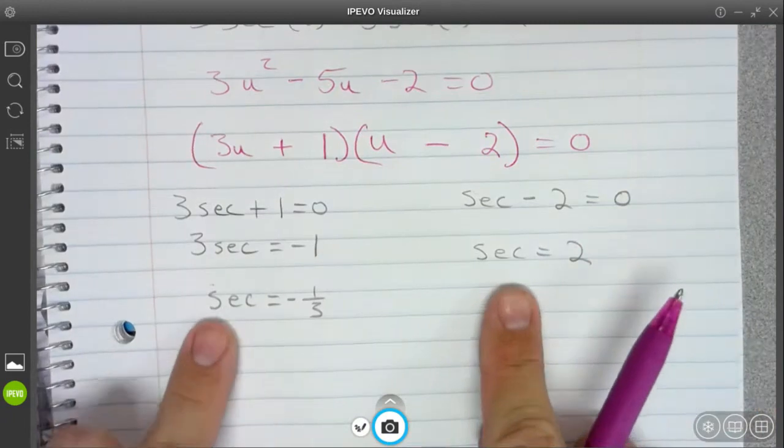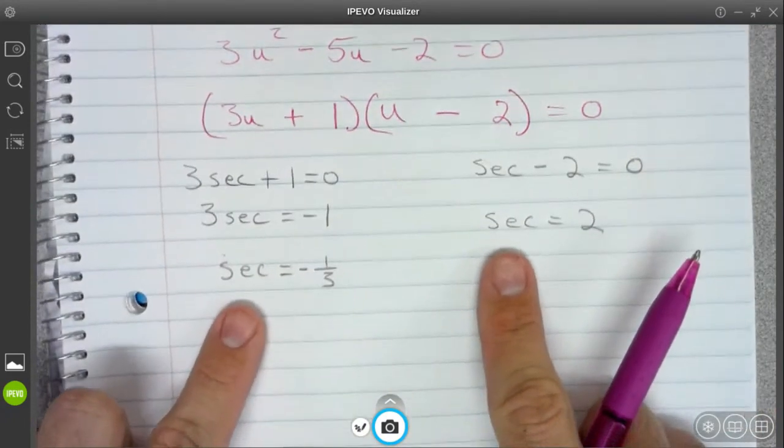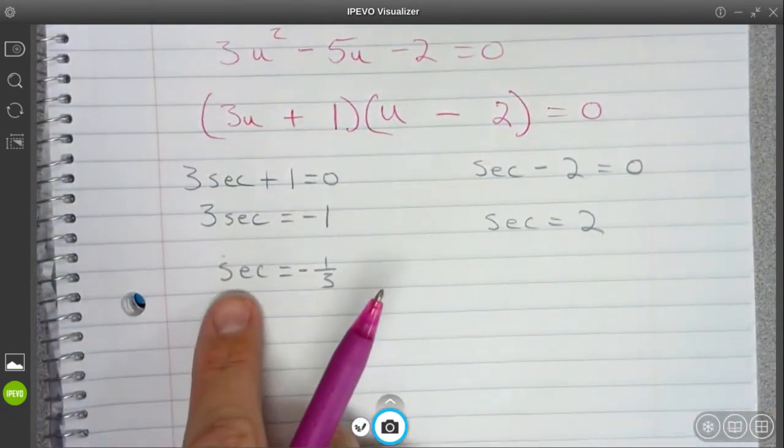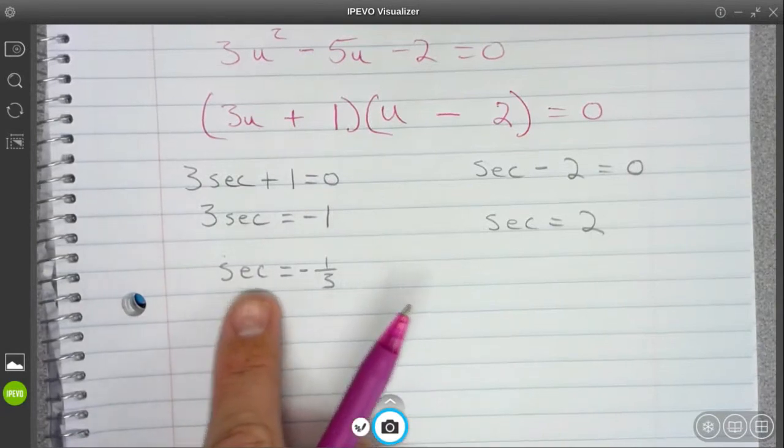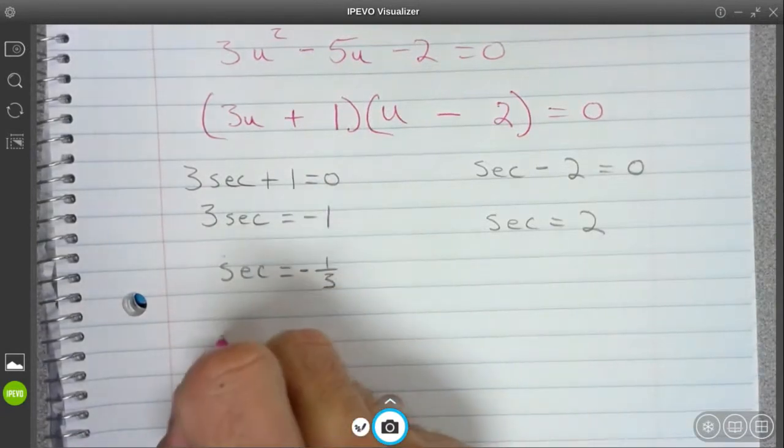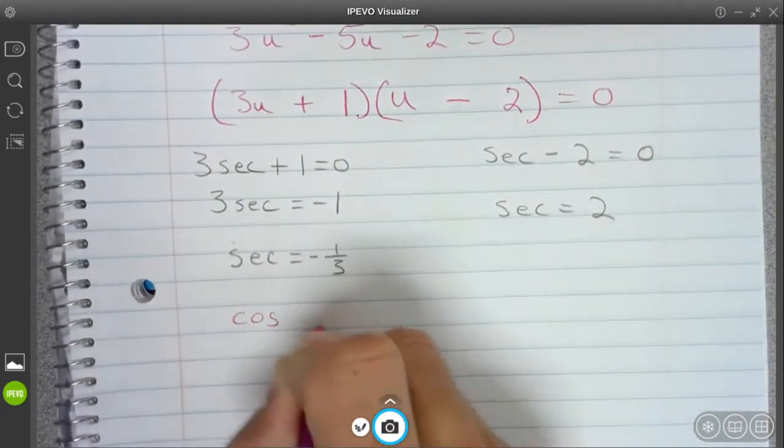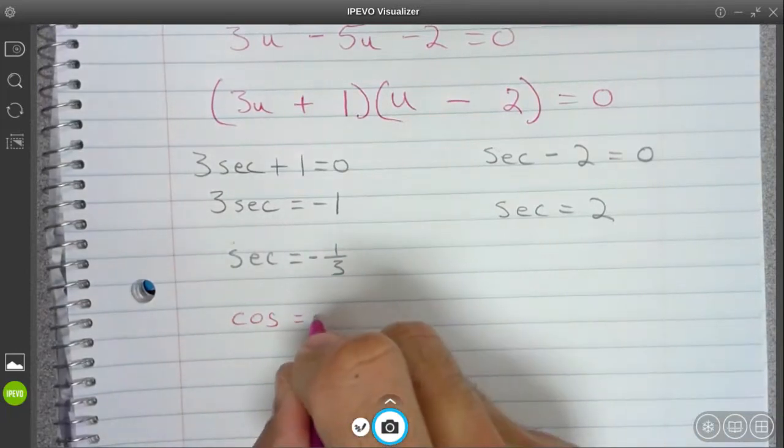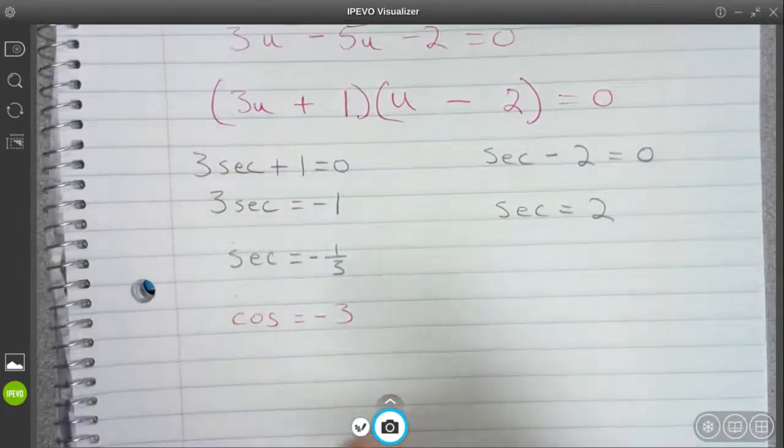All right, now I'm going to replace my secants with cosines. So instead of saying secant is equal to negative 1 third, I'm going to say cosine is equal to negative 3.